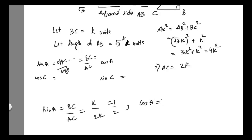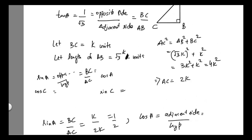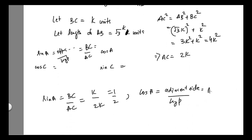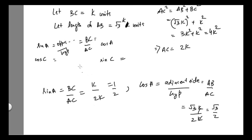Similarly, cos A equals adjacent side divided by hypotenuse. The adjacent side to angle A is AB and the hypotenuse is AC. AB equals √3K and AC equals 2K, so cos A equals √3K divided by 2K, which gives us √3 by 2.